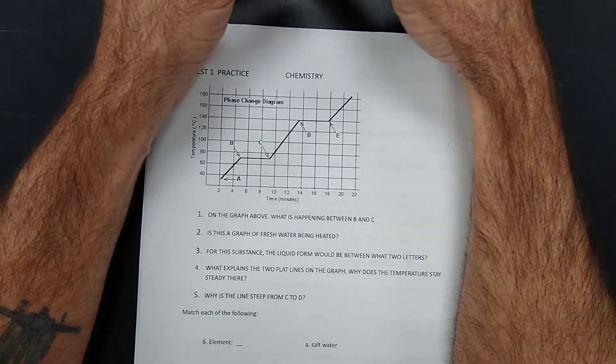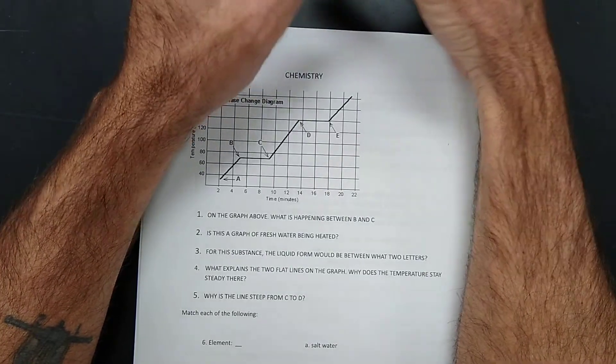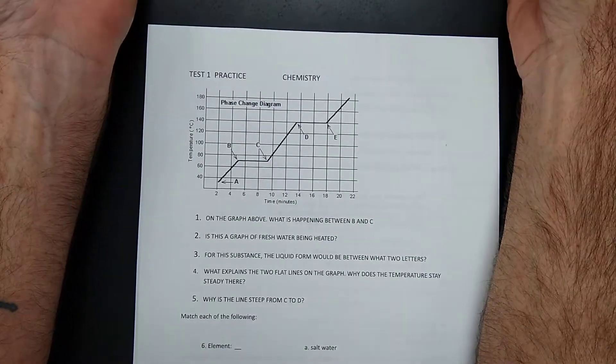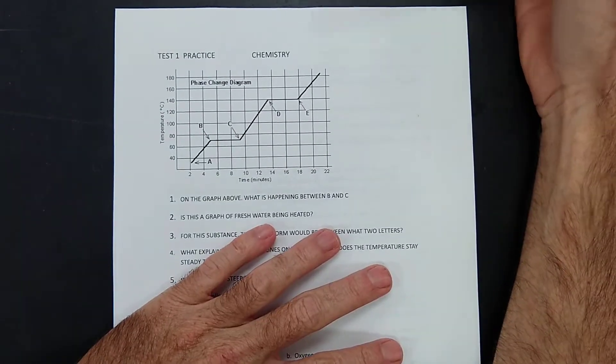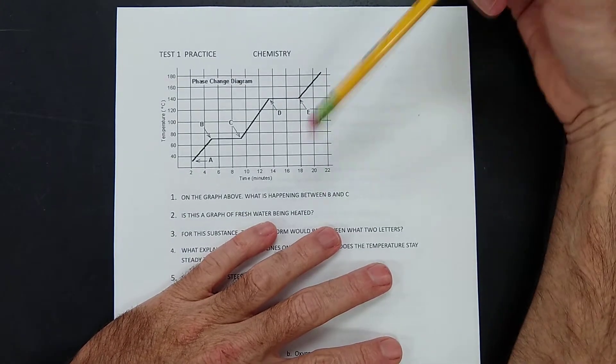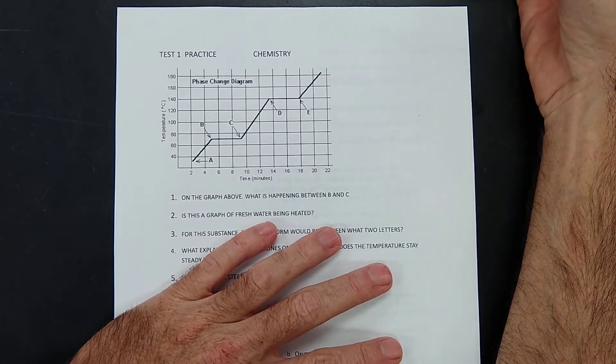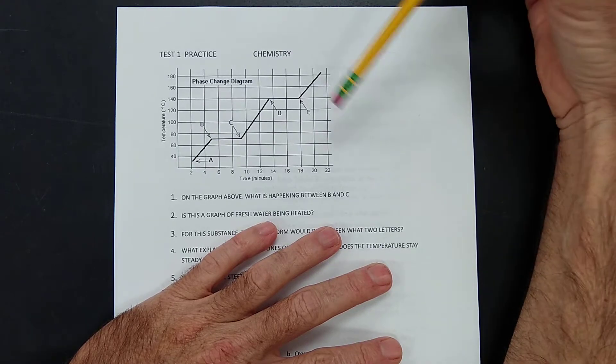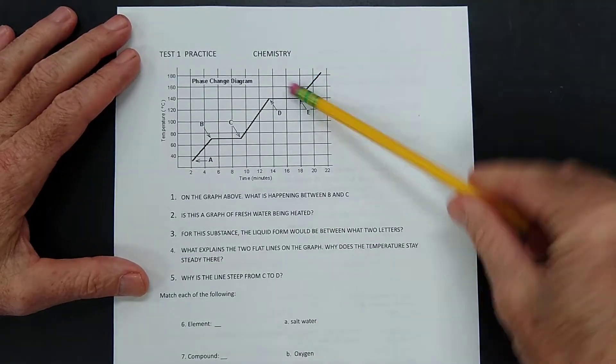You'll be doing some law of multiple proportions calculations. Other than that, this is pretty much what your test looks like. I'll also put the actual disk on the Google Classroom for you to do, obviously. But here we go.